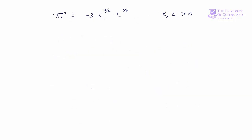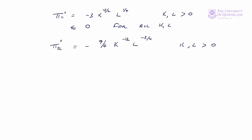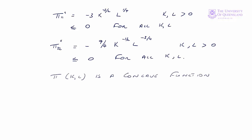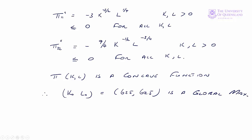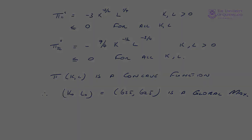We saw that π₁₁ was minus 3 times K to the minus 3/2 times L to the 1/4. Since K and L are both greater than 0, this will be ≤ 0 for all K and L in our domain. π₂₂ equals minus 9/4 times K to the minus 1/2 times L to the minus 3/4 — again this will be ≤ 0 for all K and L. Our three conditions for a global maximum are met. We've demonstrated that π(K, L) is a concave function. Therefore (K₀, L₀) = (625, 625) is a global maximum.